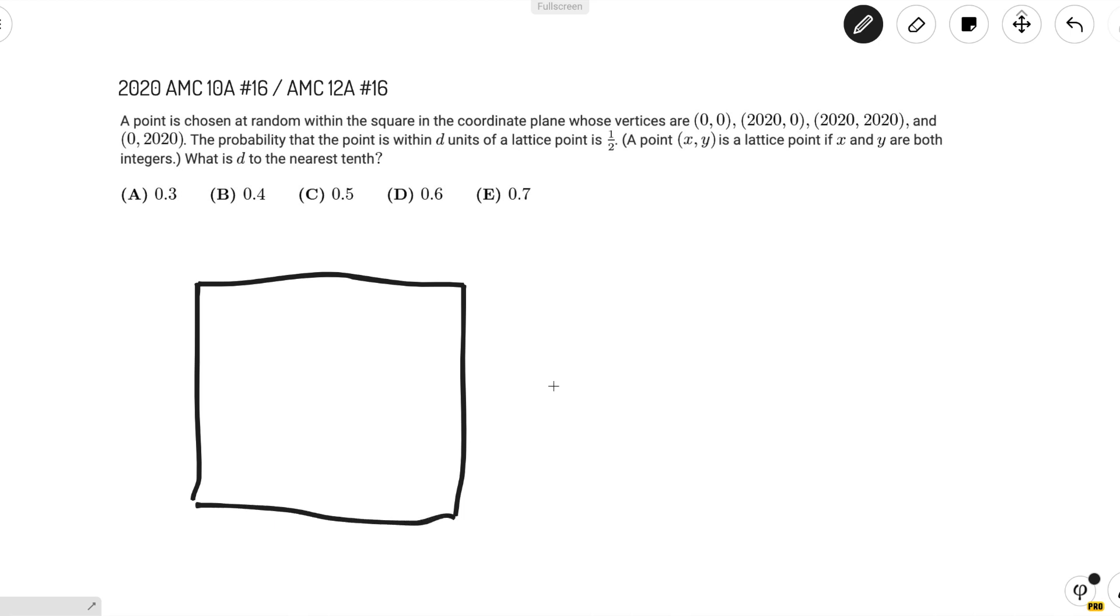For a point to be within d units of another point, it has to be within the circle with radius d centered at that other point. So (x,y) has to be in the four quarter circles centered at the four corners, because then it would be inside the square and within d units of the corners. If d is less than 1/2, then calculating the area is pretty easy, so let's hope that d is less than 1/2 for now.